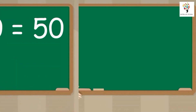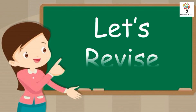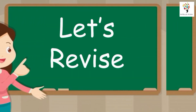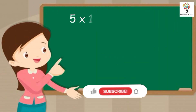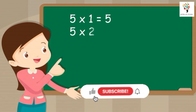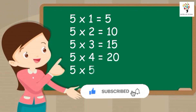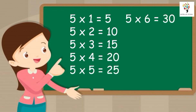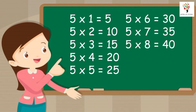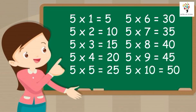Let's revise. Five ones are five. Five twos are ten. Five threes are fifteen. Five fours are twenty. Five fives are twenty-five. Five sixes are thirty. Five sevens are thirty-five. Five eights are forty. Five nines are forty-five. Five tens are fifty.